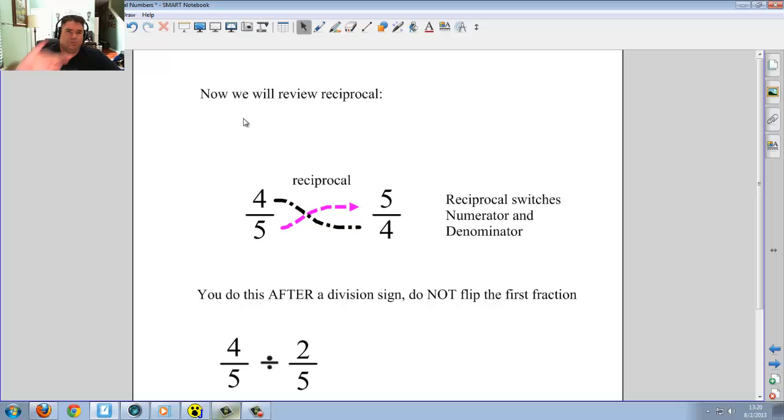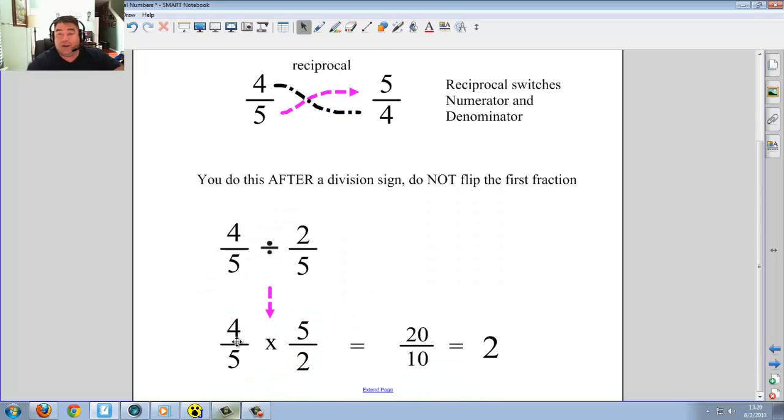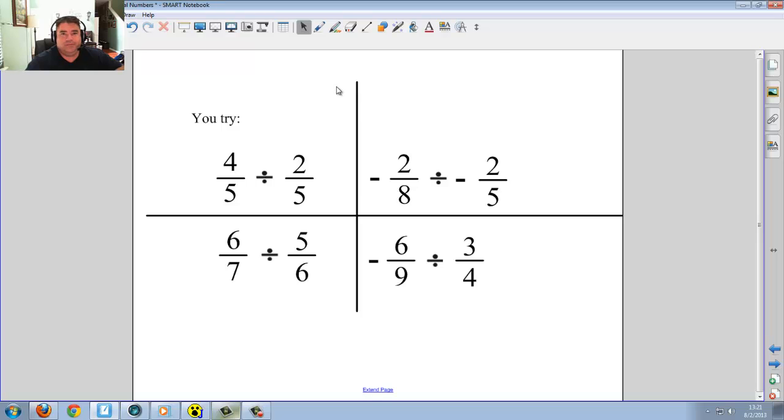Now we're going to review reciprocal. Reciprocal means to turn upside down. So instead of four over five, the reciprocal will be five over four. It just switches the numerator and denominator. You do this after division sign. Do not flip the first fraction. In other words, if you have four-fifths divided by two-fifths, four-fifths stays the same. It's two-fifths that will be swapped. So instead of two over five, it becomes five over two. But four over five does not flip. Now that you have four-fifths times five-halves, you can take top times top, bottom times bottom. Don't forget, we could just go ahead and pre-divide. Put these at one. Divide both of these by two. And get two over one that way. Either way works. Neither way is wrong. You go ahead and try.